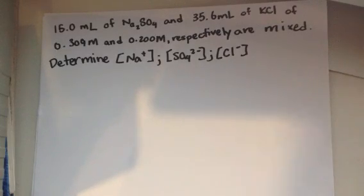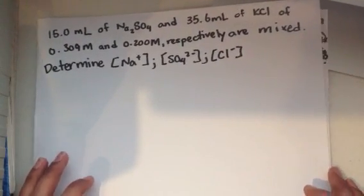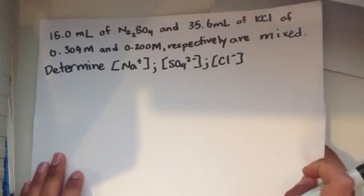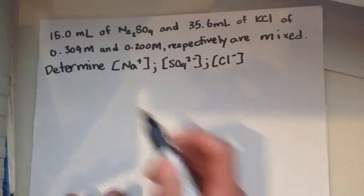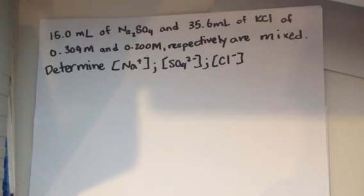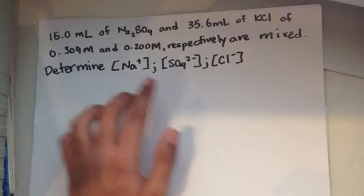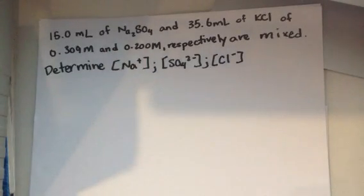For this question we're looking at another dilution and we're going to be calculating some ion concentrations. This time, however, we're going to be dealing with multiple solutions. In the question we have 15 mL of sodium sulfate and 35.6 mL of potassium chloride, with concentrations of 0.309 and 0.200 molar respectively. They're mixed and we're told to determine the concentration of sodium ion, sulfate ion, and chloride ion.